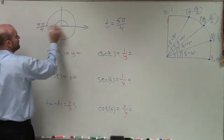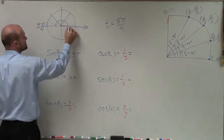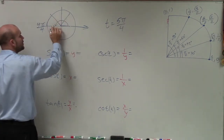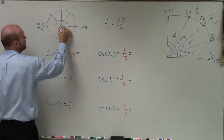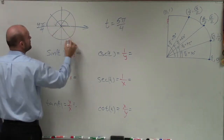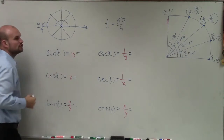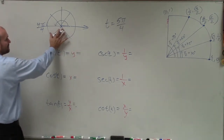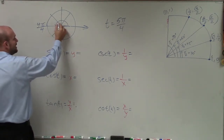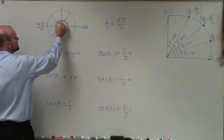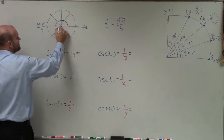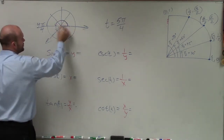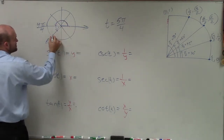4 pi over 4 means I can break this up into fourths — that's pi over 4, 2 pi over 4, 3 pi over 4, 4 pi over 4. So to find 5 pi over 4, I'm going to break up the lower half of my unit circle into fourths. By counting 5 fourths, I can see that's my terminal side.